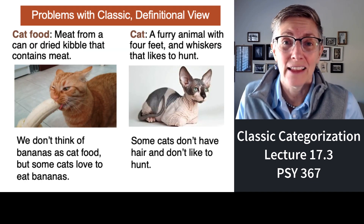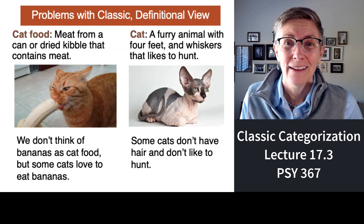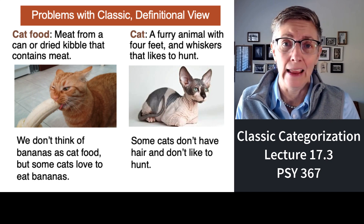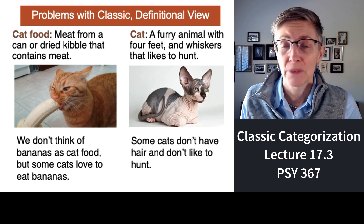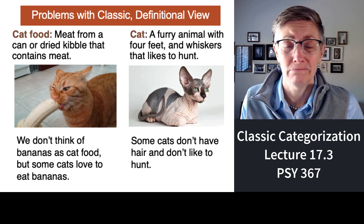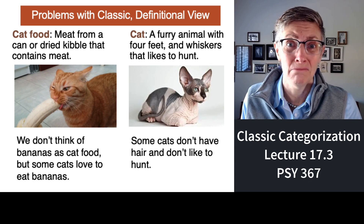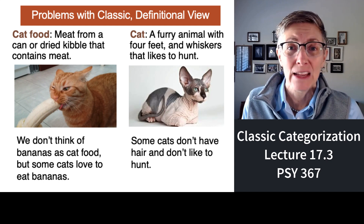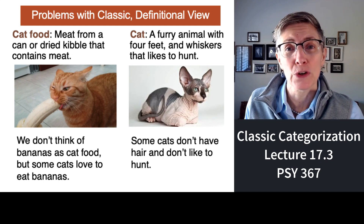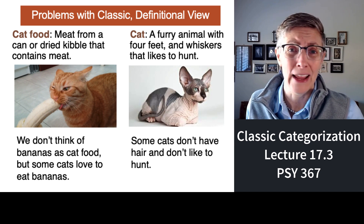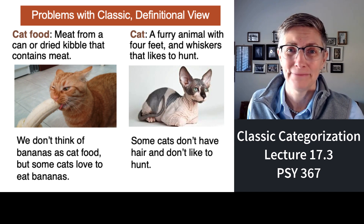Let's take the category of pet food. You'd think, well, easy — cats like meat, so meat out of a can or dried kibble. But some cats like to eat bananas, some like popcorn. That's cat food. So what do you do with your definition of cat food? Is it anything a cat will eat? If somebody asks me to go to the grocery store and get cat food and I come back with bananas, is that okay? Probably not.